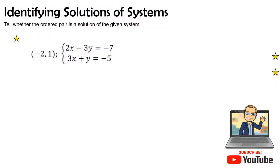Hey guys, welcome back to the Math is Simple YouTube channel. This is part two of our series on identifying solutions of systems. Our goal is to tell whether the ordered pair (-2, 1) is a solution of the given system. When it says 'is a solution,' that means does that point (-2, 1) fall on that line of that equation.